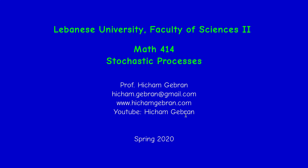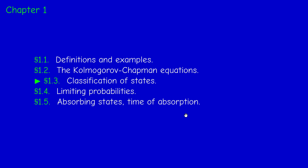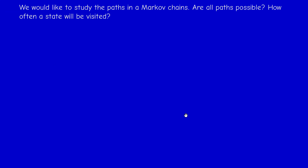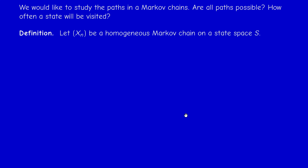Welcome to this new video. We are still in chapter 1 and now we move to section 1.3 on classification of states. In this section there will be three subsections; in this video I will cover just the first subsection about communication classes. We would like to study the paths in the Markov chain. The questions are: are all paths possible, and how often will a state be visited?